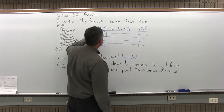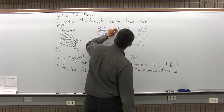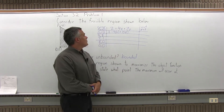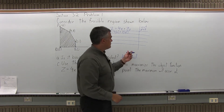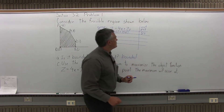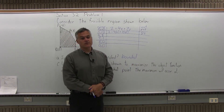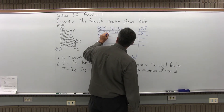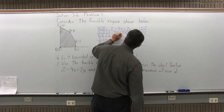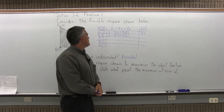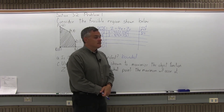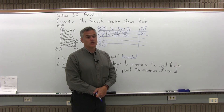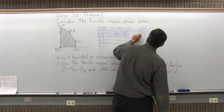Same process, same corner points, but with a different object function. First corner point (0,12): z equals 4 times 0 plus 7 times 12. So 4 times 0 is 0, 7 times 12 is 84, and 0 plus 84 gives an output of 84 — different from the previous part. Next corner point (4,8): z equals 4 times 4 plus 7 times 8. That's 16 plus 56, which gives an output of 72.